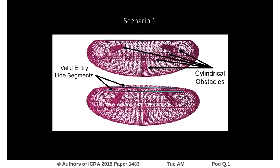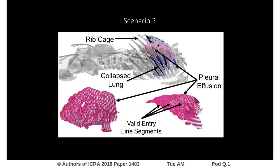We evaluate our method in two scenarios. In the first, we consider an ellipsoidal volume with cylindrical obstacles. In the second scenario, we consider the case of visualizing the interior surface of the pleural effusion. Here, we segment the effusion volume from a CT scan of a real patient with this condition and consider the optimization of CRISP robot designs in order to enter the volume in between the patient's ribs and visualize the space.